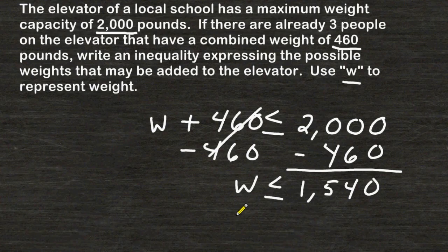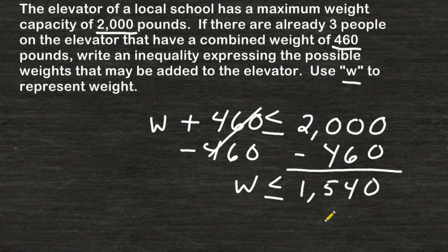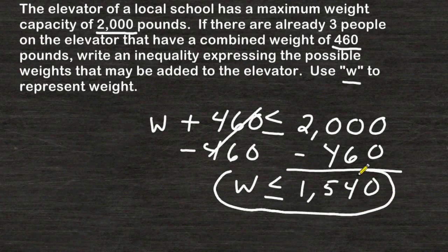This tells us what possible weights we may add to the elevator if there is already a combined weight of 460 pounds on the elevator. We may load up to 1,540 more pounds on the elevator, or anything less than 1,540. This is the inequality that represents the possible weights that may be added to the elevator if there are already 460 pounds on the elevator.